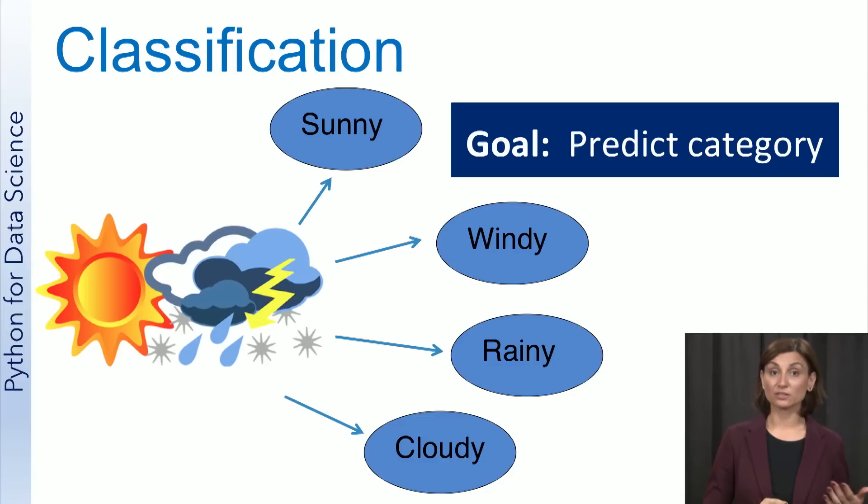Another example is to classify a tumor as either benign or malignant. In this case, the classification is referred to as binary classification, since there are only two categories. But you can have many categories as well, as the weather prediction problem shown here with four different categories. Another example is to identify handwritten digits as being one of ten categories, that is zero to nine.